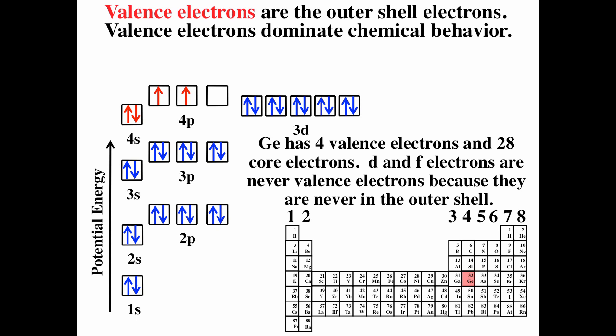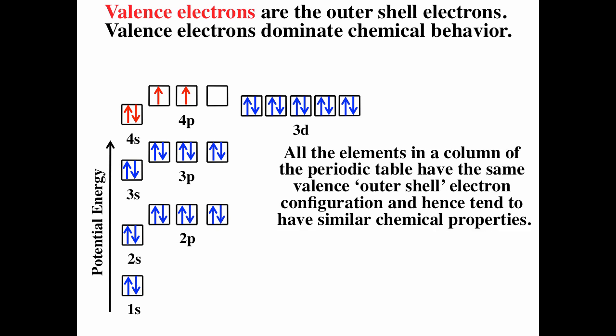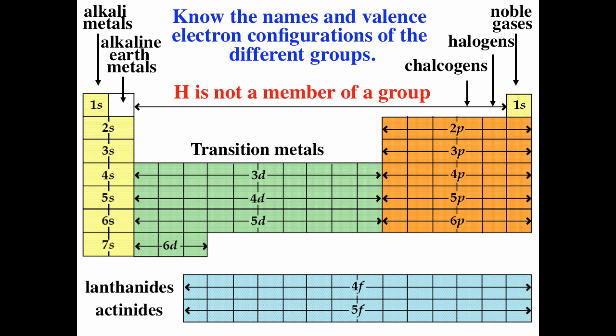All elements in a column have the same valence electron configuration, which means elements in the same column tend to have similar chemical properties and react in similar ways. So we group the periodic table: the far left column is alkali metals, the second column is alkaline earths, the far right column is noble gases, then halogens, then chalcogens. In the middle are the transition metals, and at the bottom are the lanthanides and actinides.